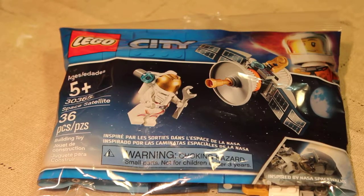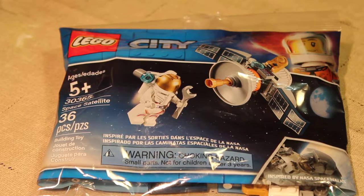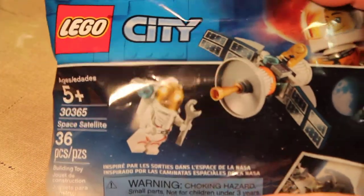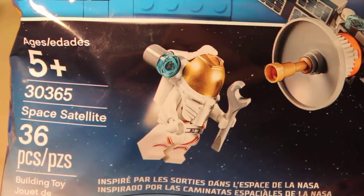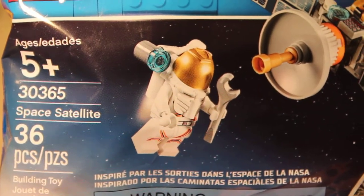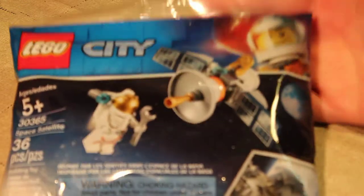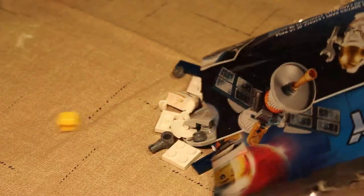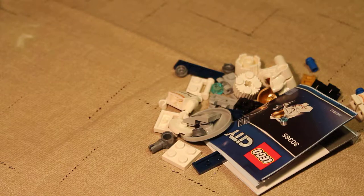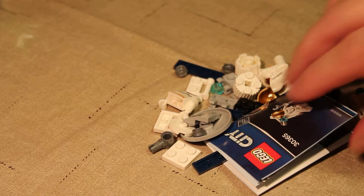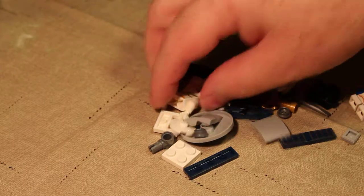Welcome back once again, Spazites. This is Gizmo Spaz, and today we have before us the LEGO City Space Satellite Set 30365. Now this one actually says down here, inspired by NASA spacewalks. But we're going to go ahead and build this bad boy today. Now there is currently a Mars mission series that's out, and I think this is related to that. But there's a whole bunch of different types of space things going on in the LEGO world right now. And yeah, let's go ahead and build this set.